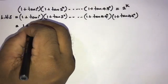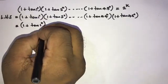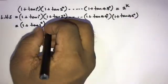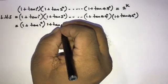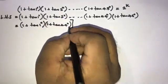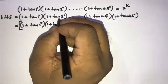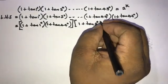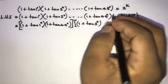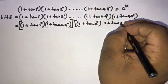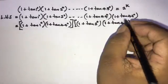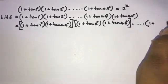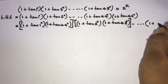Now we can rewrite this by pairing terms. Take (1 + tan1) with (1 + tan45), then (1 + tan2) with (1 + tan43), and so on through the last term (1 + tan45). We know that tan(45°) = 1.